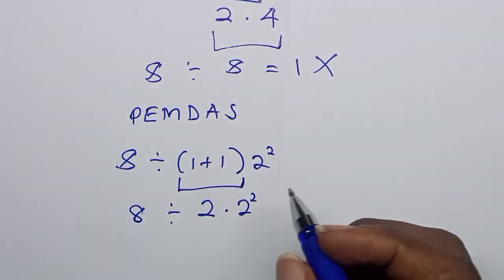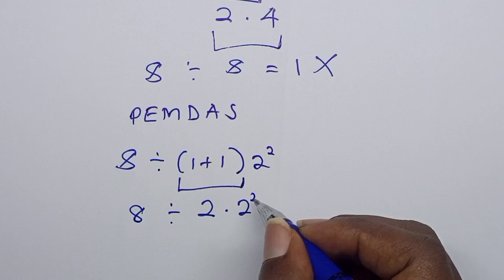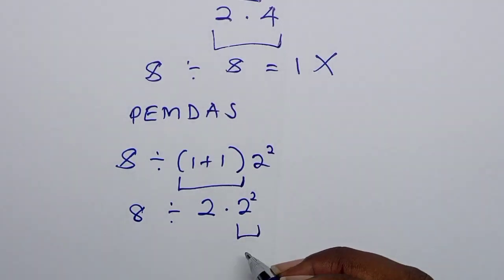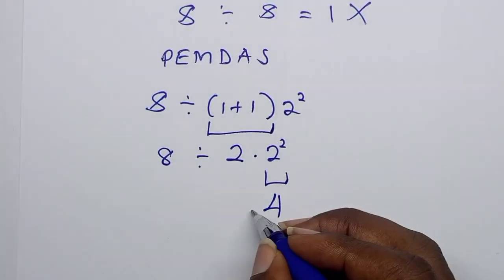Then the next is exponents. Here we have the exponent 2 to the power 2. So we work out this. 2 to the power 2 is 4.